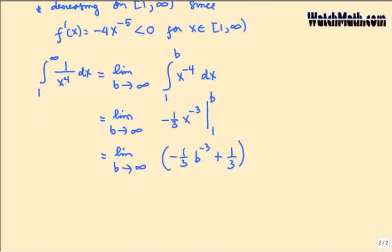When b goes to infinity, the term negative 1 over 3b³ goes to 0, so the limit equals 1/3.